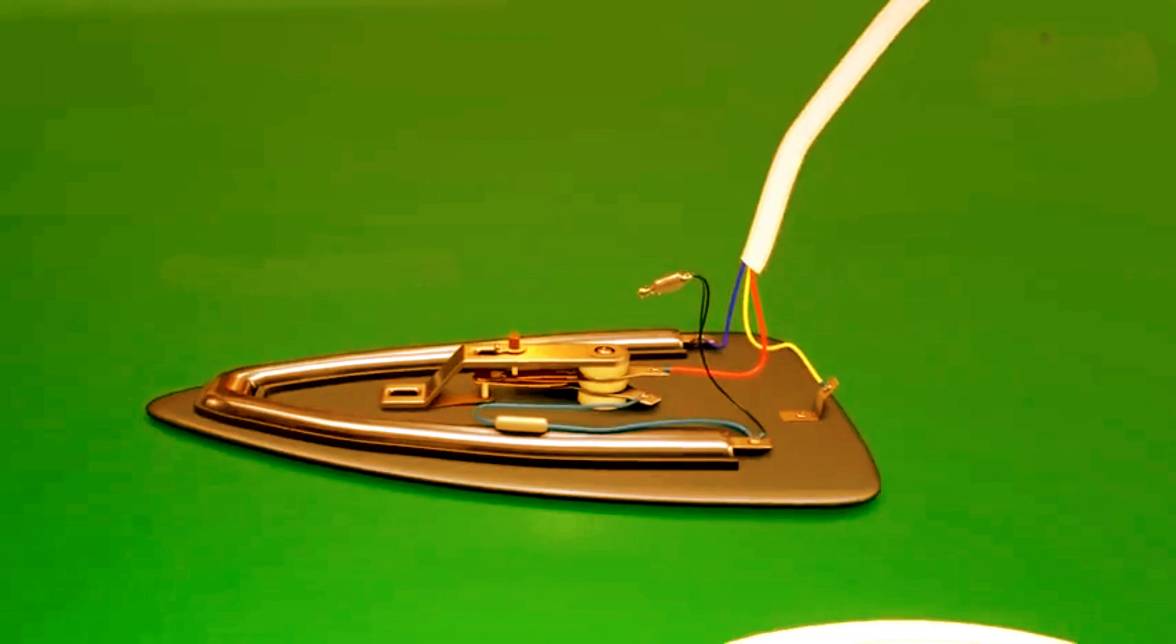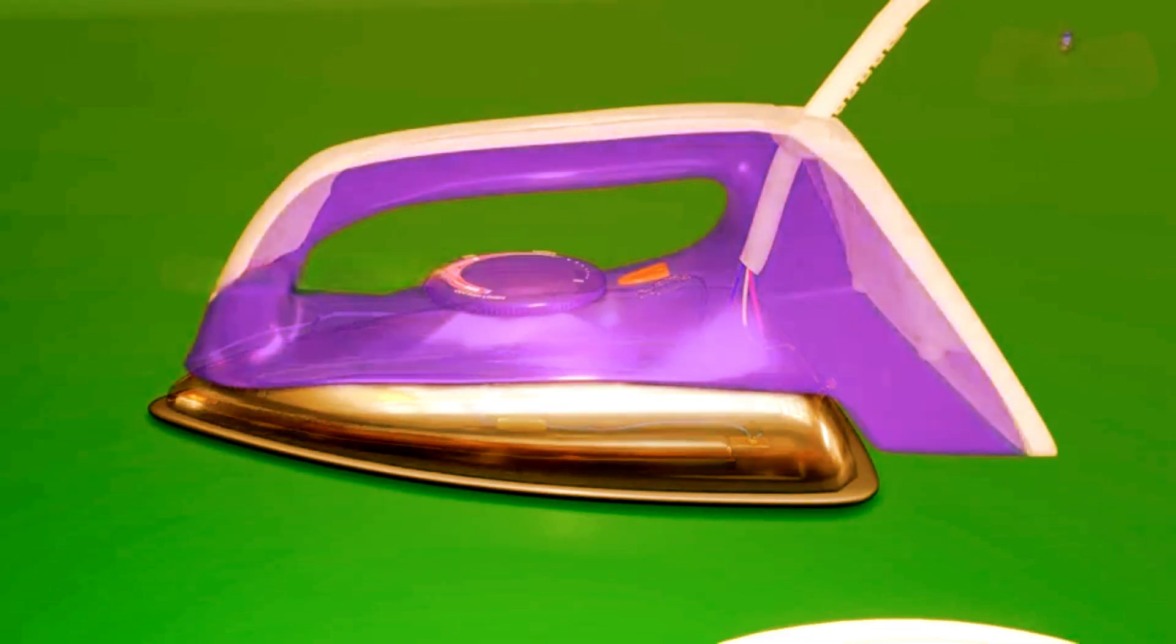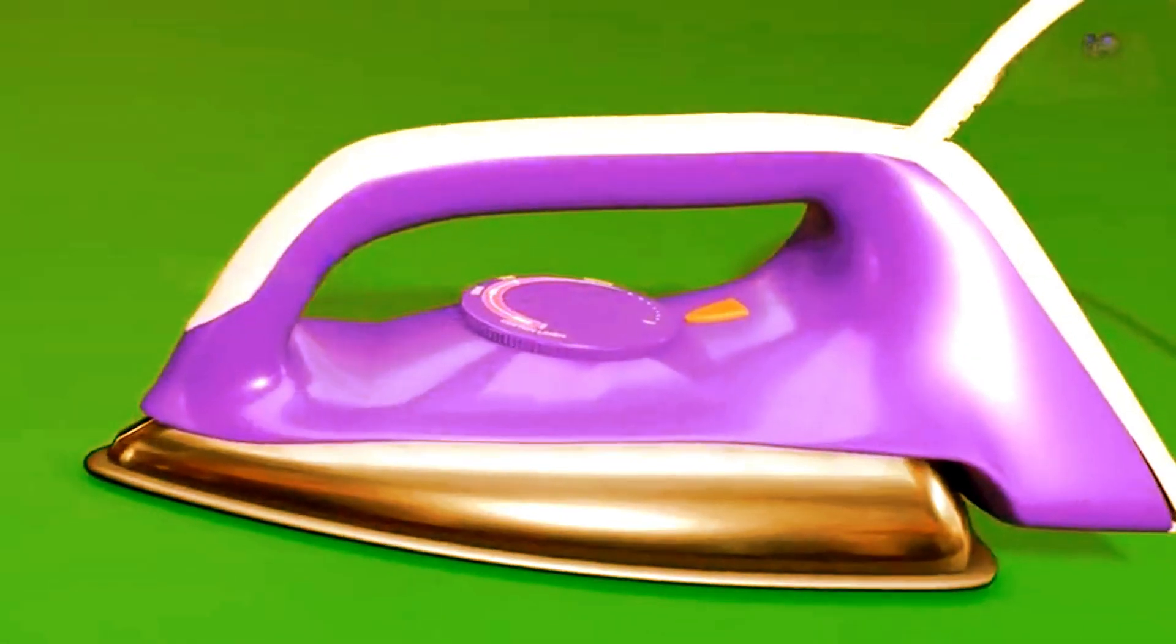The thermal fuse protects the iron by stopping the power if something goes wrong. We hope this video helps you understand how an electric iron works.